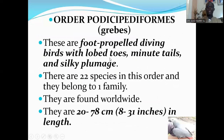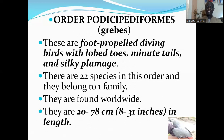The next order is Order Podicipediformes, which consists of the grebes. These are foot-propelled diving birds with lobed toes, minute tails, and silky plumage. There are 22 species in this order and they belong to one family. They are found worldwide. They are 20 to 78 centimeters in length.